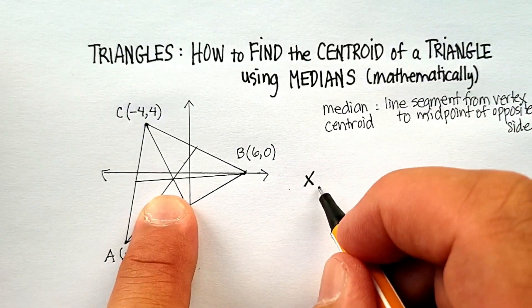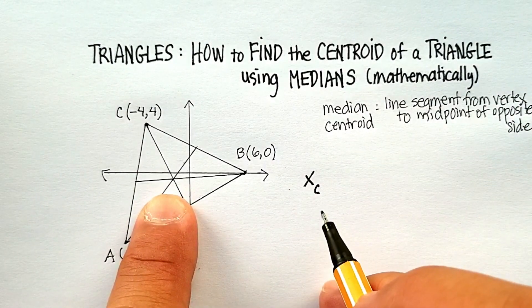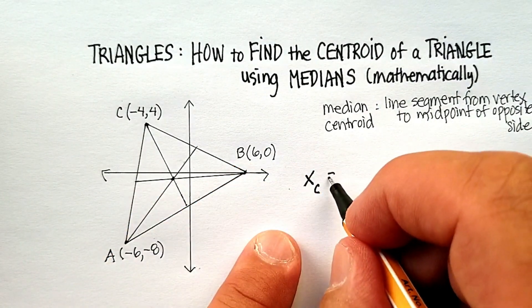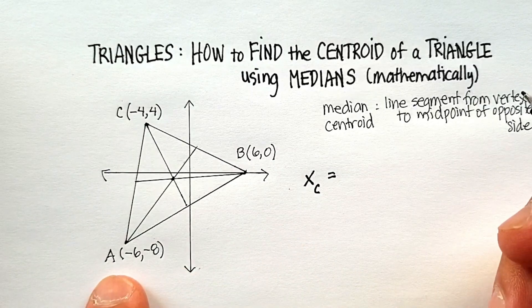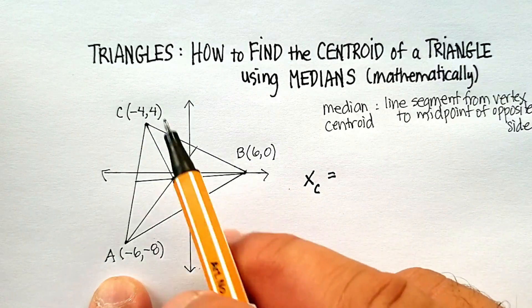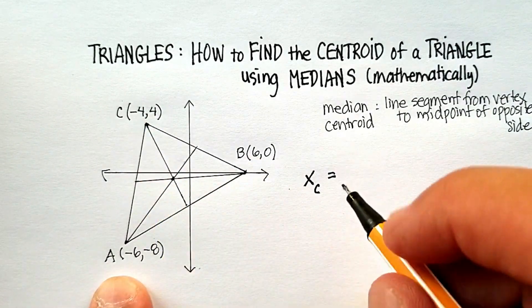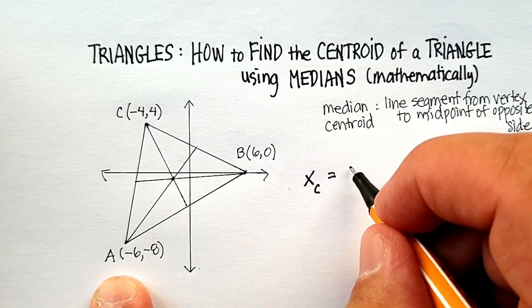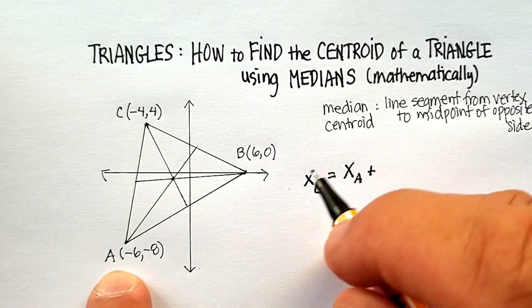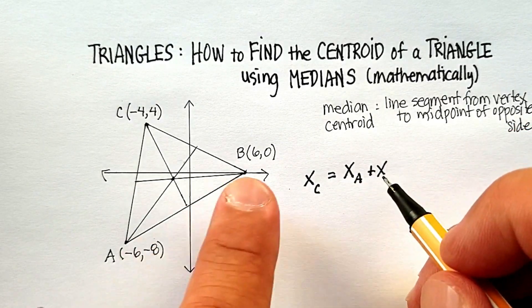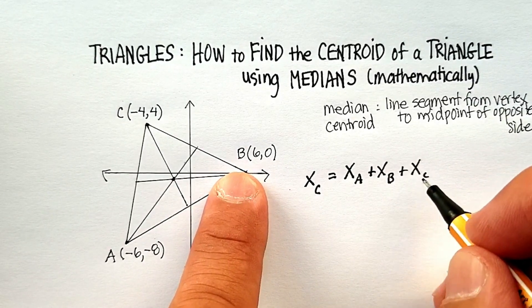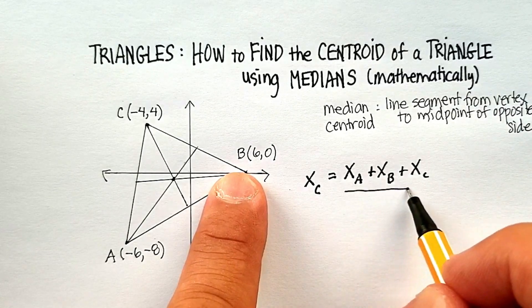So, the x for the centroid, so I'm going to say x sub c, right there, is going to be equal to the x value of the A plus the x value of the B and the x value of the C. So, let's do that. The x sub a plus x sub b plus x sub c all divided by 3.